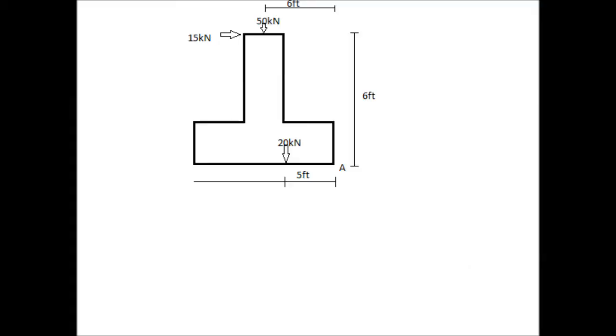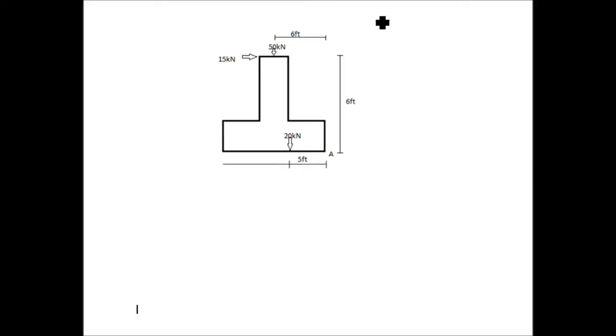To start this problem, we must first find the summation of x and y forces acting on the wall. Let's start with the x forces. We only have one x force of 15 kN acting on the top of the wall. Now we will find the summation of y forces on the wall. We have 50 kN acting downward at the top of the wall and 20 kN acting downward in the footing of the wall. So the summation of y forces will be 50 kN plus 20 kN, which will give you a total of 70 kN for your y forces.